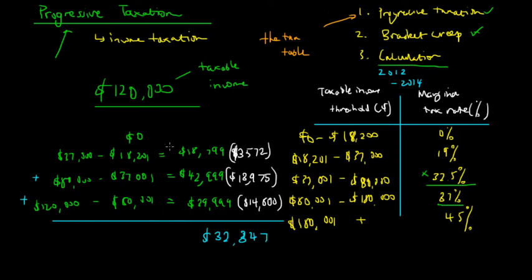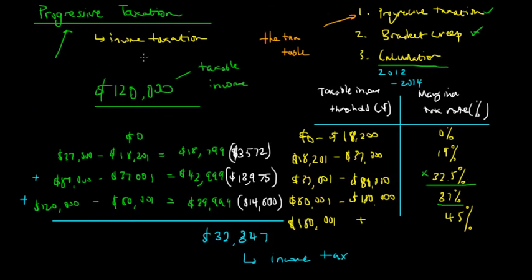That's how we calculate income taxation under progressive taxation. Of the $120,000 earned, we pay approximately $32,347 in income tax. The key takeaway is that as your income rises, you pay a higher proportion of your income in tax — that's the fundamental principle of progressive income taxation.